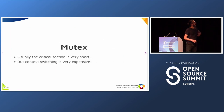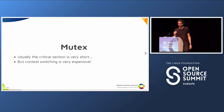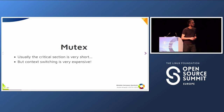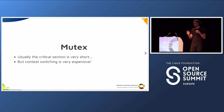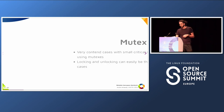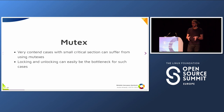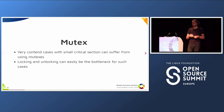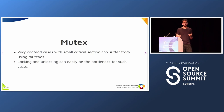But there's a problem here, because usually the critical section is very short, but doing a context switch nowadays — after the CPU vulnerabilities — is very, very expensive. If you want to move from user land to the kernel and back, this can take a lot of time. So a very contended case with small critical sections can suffer using mutexes, because instead of doing the work you're supposed to do, you are wasting a lot of CPU cycles just locking, unlocking, preempting, and doing the context switch.